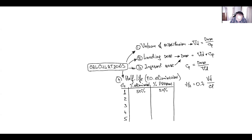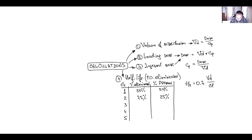After the first half-life: 50% eliminated, 50% remaining. After the second half-life: 75% eliminated, 25% remaining — we add half of the previous remaining amount. After the third half-life: 87.5% eliminated, 12.5% remaining. After the fourth half-life: 93.625% eliminated, 6.375% remaining.